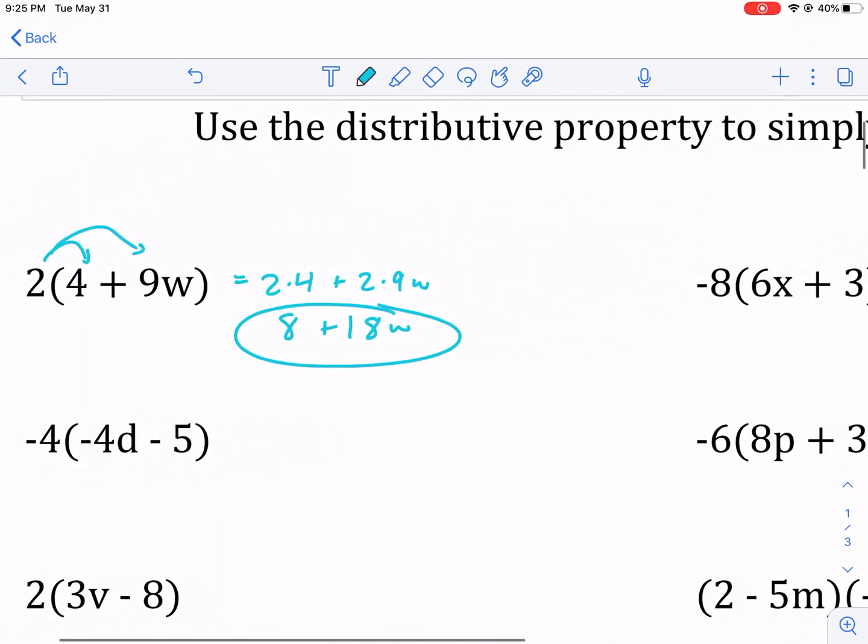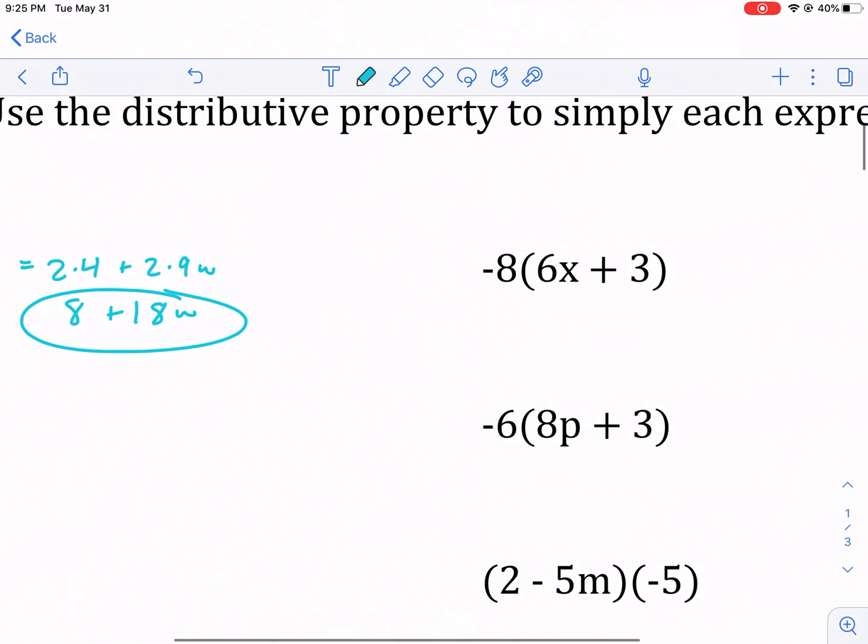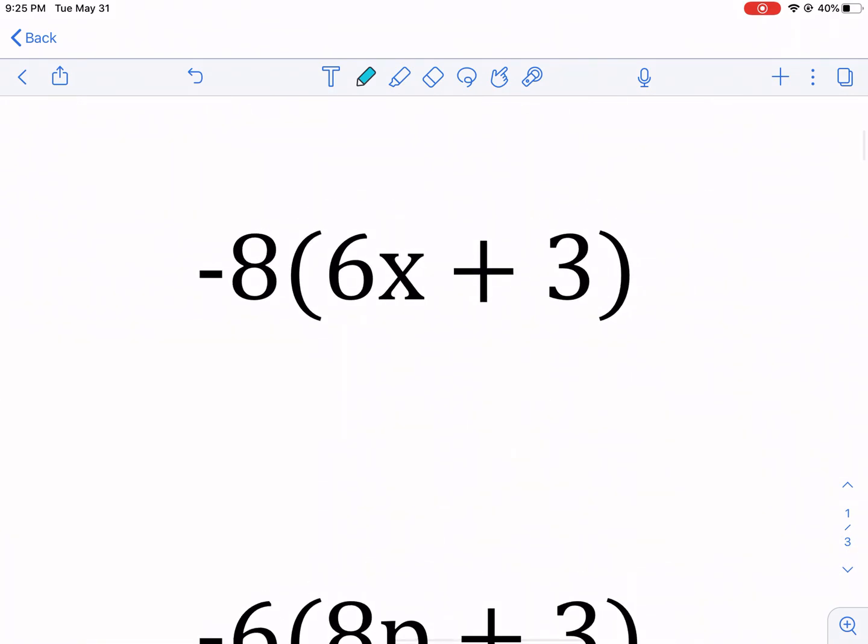Now, the only times we really got to be careful is when we have negatives. So here's our first negative example. We're going to have negative 8, and we're going to need to multiply this by the first term, and then also the second term inside the parentheses.